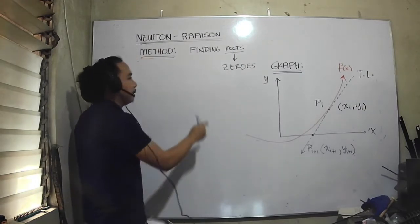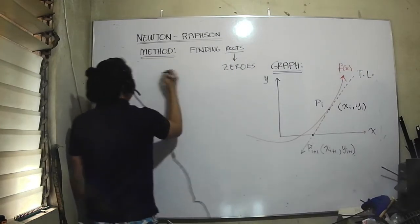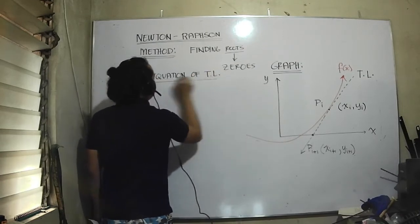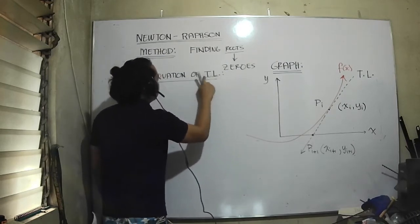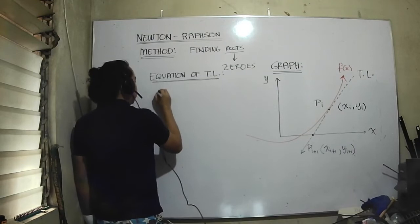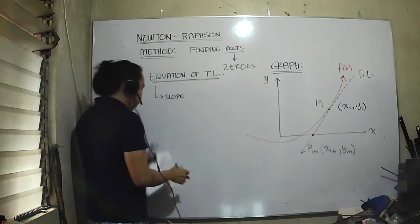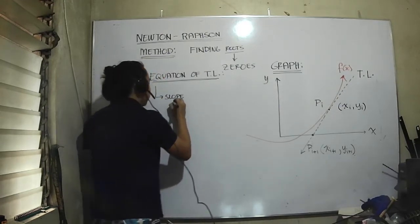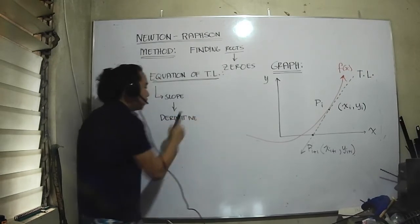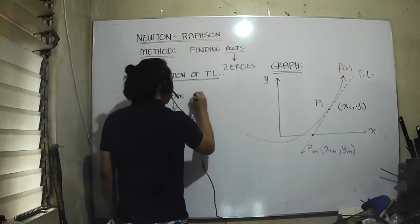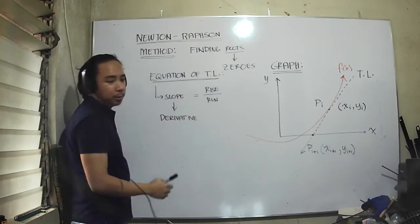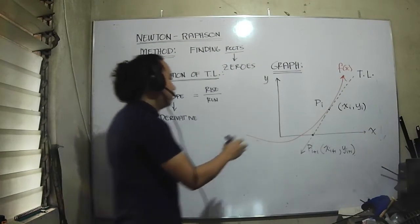Let's go back to the equation of tangent line, TL is tangent line. When you say tangent line, slope of the tangent line to the curve is what we call in differential calculus the derivative. The slope is the derivative, and slope is also equal to rise over run, as we discussed in analytic geometry.